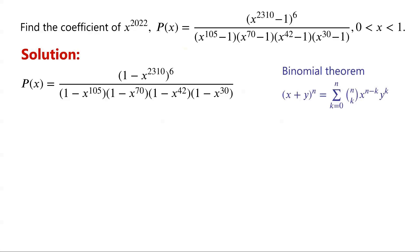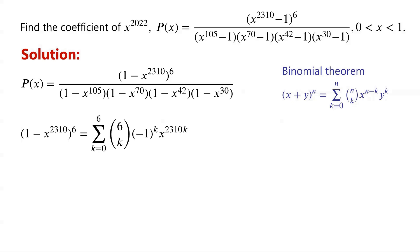By the binomial theorem, X plus Y all to the power of N equals the sum from K equals 0 to N of N choose K times X to the power of N minus K times Y to the power of K. Applying the binomial theorem, the numerator 1 minus X to the power of 2310, all to the power of 6, can be written as the sum from K equals 0 to 6 of 6 choose K times negative 1 to the power of K times X to the power of 2310K.